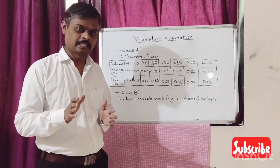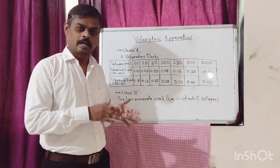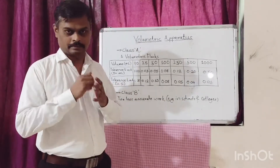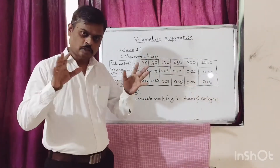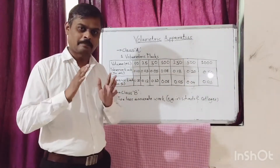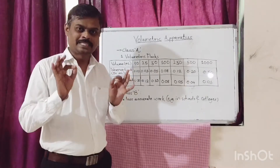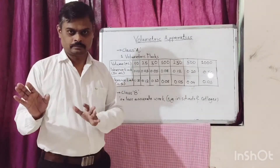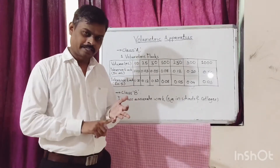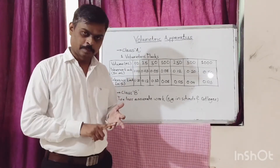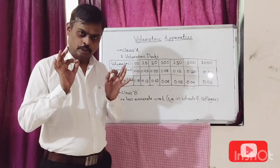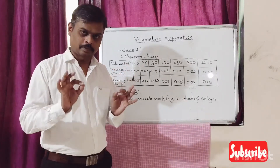ASTM stands for American Society for Testing and Materials. These tolerance limits for Class A glassware are mentioned in USP General Chapter 31. The tolerance limits for volumetric flasks, transfer pipettes, and burettes are mentioned in USP Chapter 31.